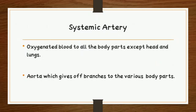The third category is systemic arteries. These vessels carry oxygenated blood to all parts of the body except the head and lungs. They fuse together to form a major vessel called the aorta, which gives off branches to various parts of the body such as the fore and hind limbs, digestive system, liver, pancreas, kidneys, genital organs, and muscles.